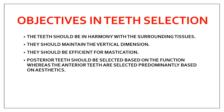We have anterior and posterior teeth. Posterior teeth perform the function of mastication — chewing food. Anterior teeth are mainly used for aesthetics. So whenever you are selecting teeth, posterior teeth should fulfill the functional requirement and anterior teeth should fulfill the aesthetic requirement. These are the various objectives in selecting the teeth.